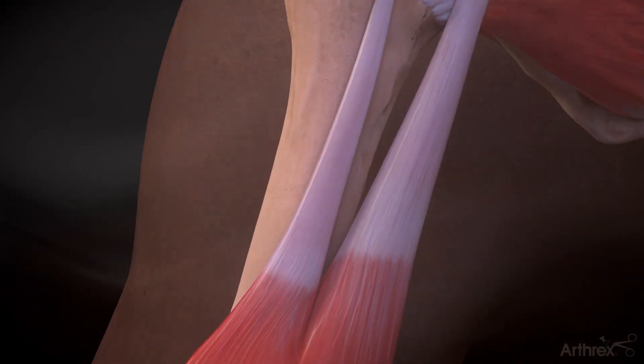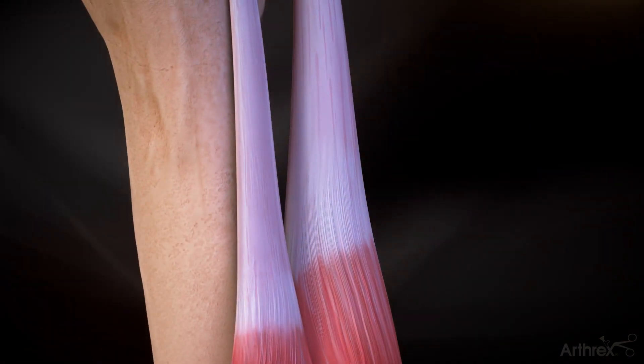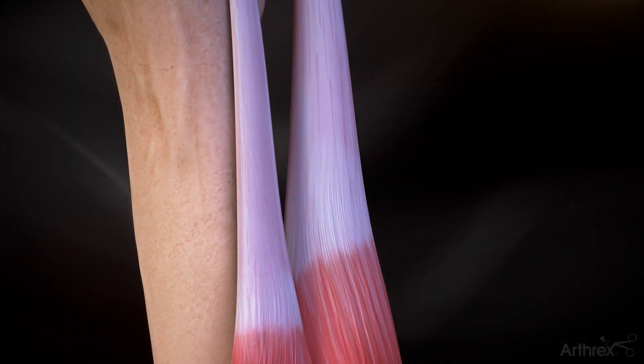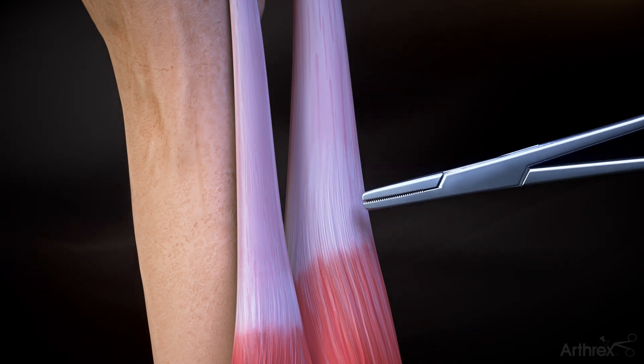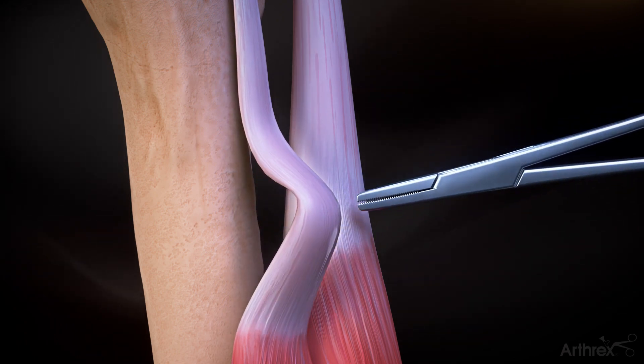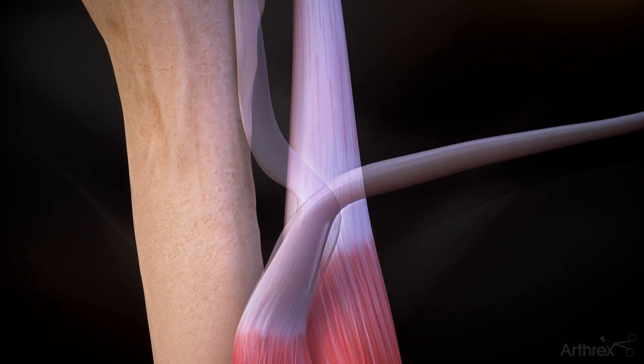Make a two to three centimeter incision in the axilla at the inferior border of the pectoralis major. Bluntly dissect to identify the pectoralis major and the long head of the biceps tendon. Retrieve the previously tenotomized biceps tendon through the incision.